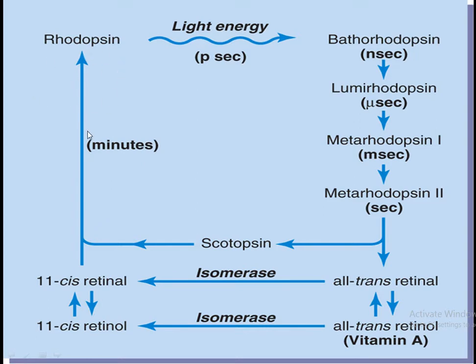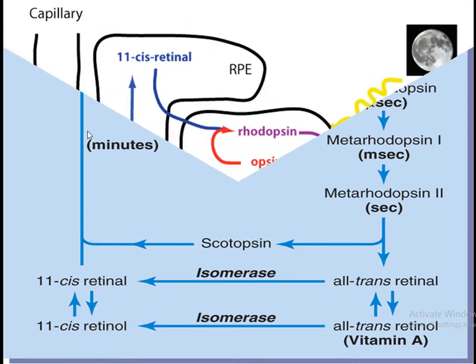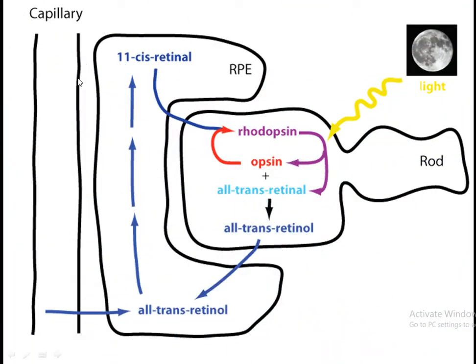In the light, decomposition takes place, while in the darkness the synthesis of more rhodopsin takes place. A very simple diagram shows just the conversion or decomposition of rhodopsin and conversion of the cis form into all-trans form without showing the intermediate products. The cycle starts when light rays fall over rhodopsin and it decomposes into opsin and all-trans retinol, and in the presence of vitamin A it changes into all-trans retinol.